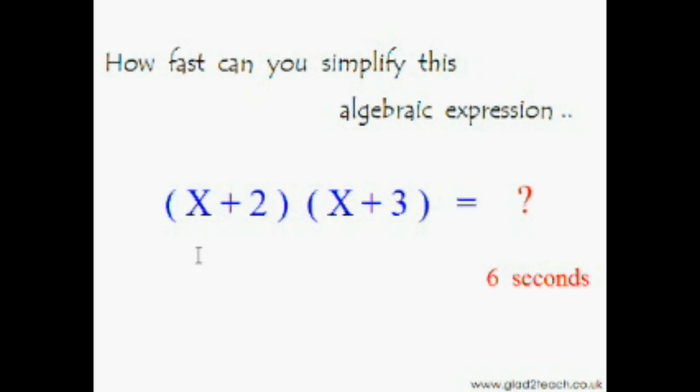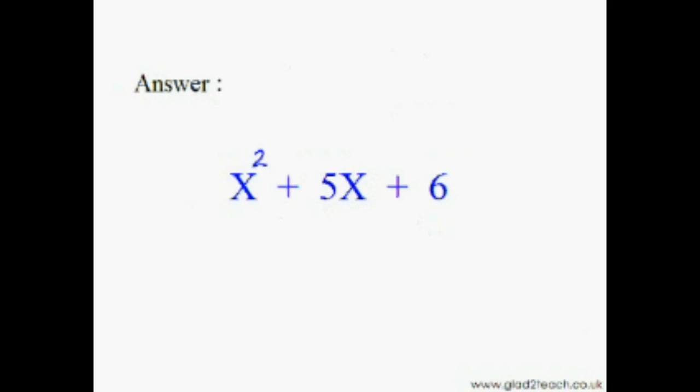The correct answer would be x times x is x², and 2x plus 3x is 5x plus 6. The correct answer would be x² + 5x + 6. Let's check that out. Here it is: x² + 5x + 6. Could you get that one? Well, if you did not get it, not to worry at all, for I have a very easy trick to do these types of questions.